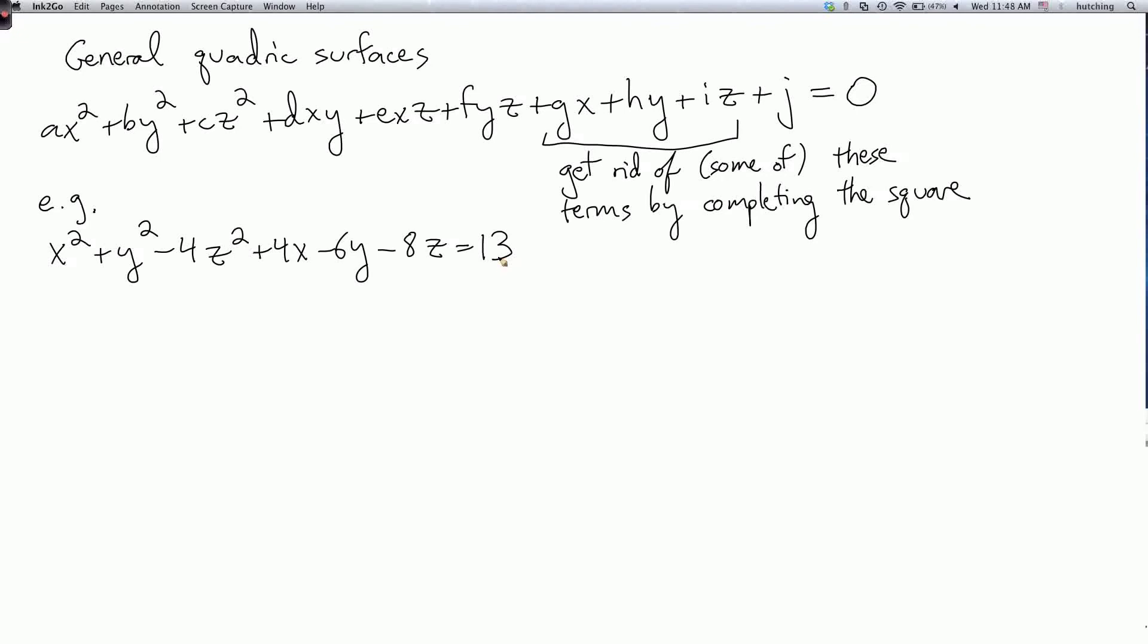So I can rewrite this equation as x plus 2 squared plus y minus 3 squared minus 4 times z plus 1 squared. And then when you work out all the constant terms, what's left is 22.